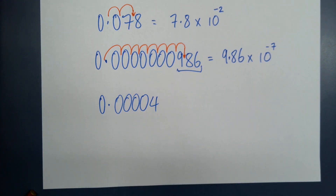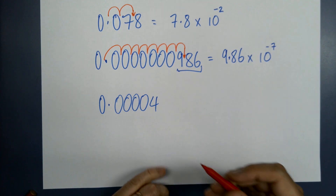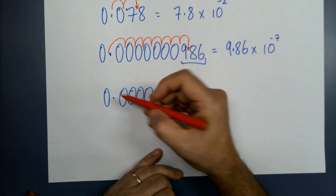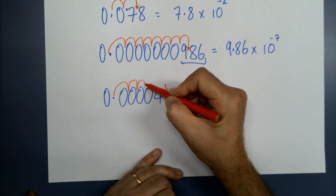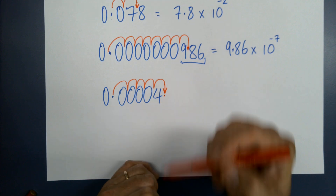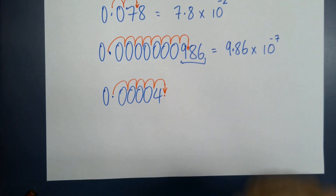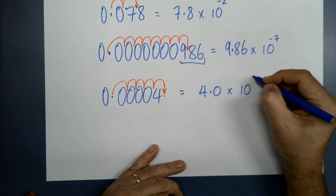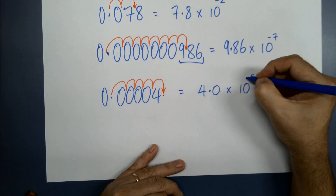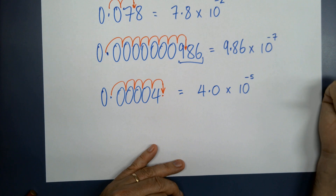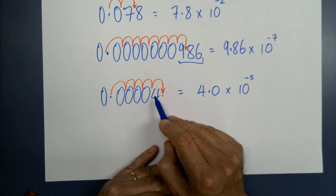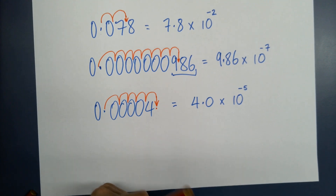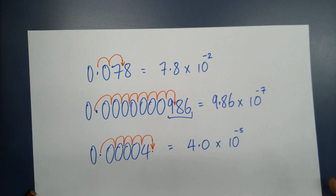One more: 0.00004. Where does my decimal point need to end up? It's got to end up after the 4. One, two, three, four, five — so that's 4.0 times ten to the negative five, because it's a really small number. The five comes from how many place values I've jumped.